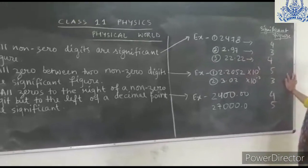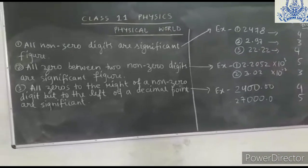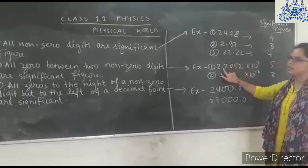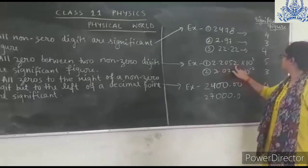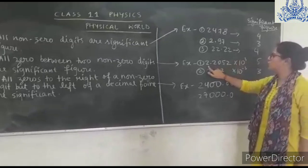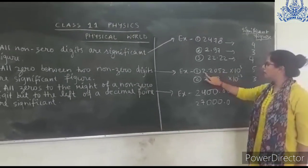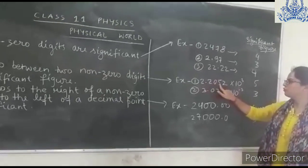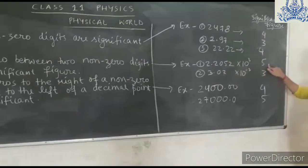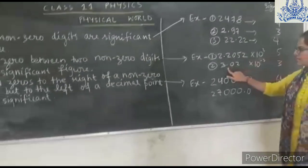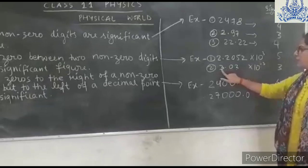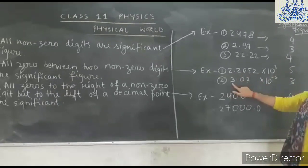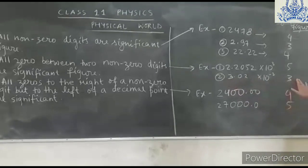Rule 2: All zeros between two non-zero digits are also significant figures. For example, in 2.2052, there are five significant figures in total — 1, 2, 3, 4, 5. Similarly, in 3.03, there are three significant figures, as the zero between two non-zero digits is counted as significant.